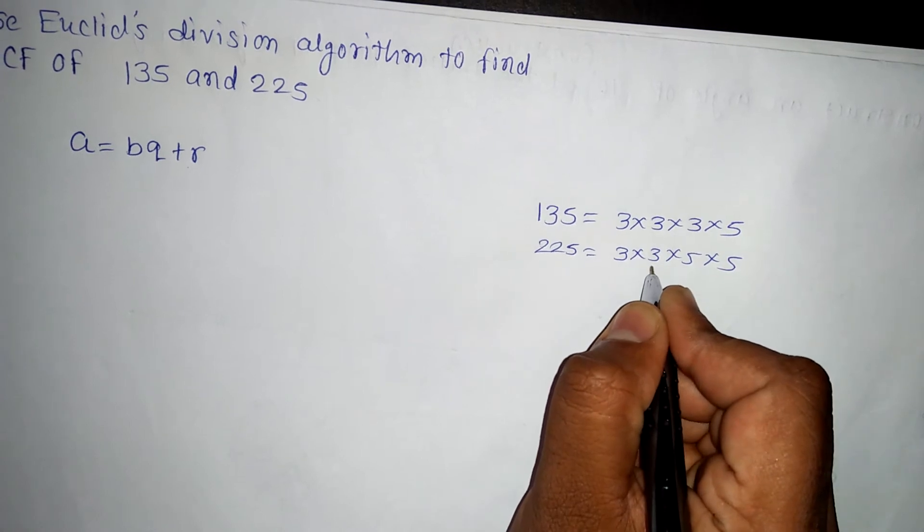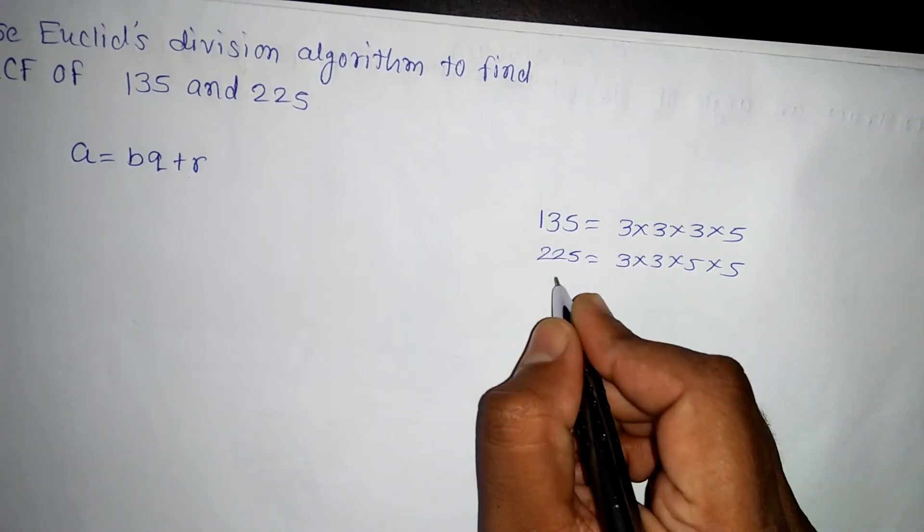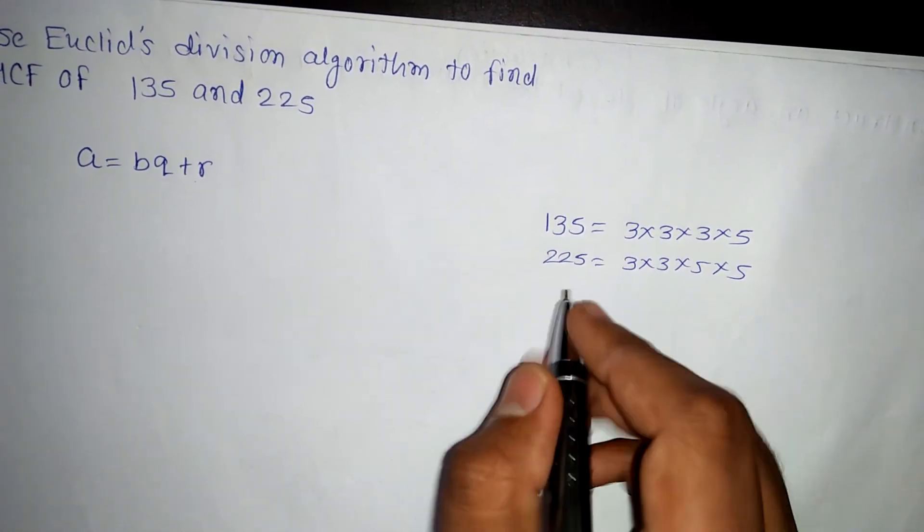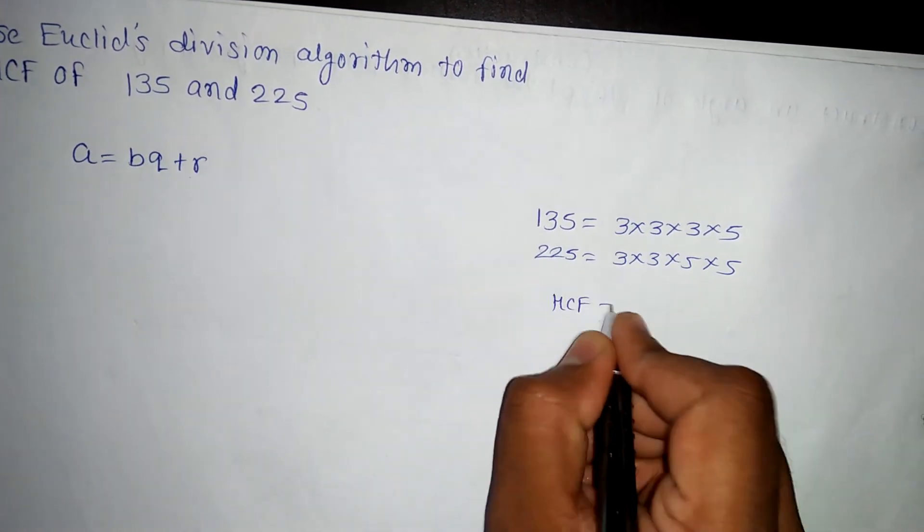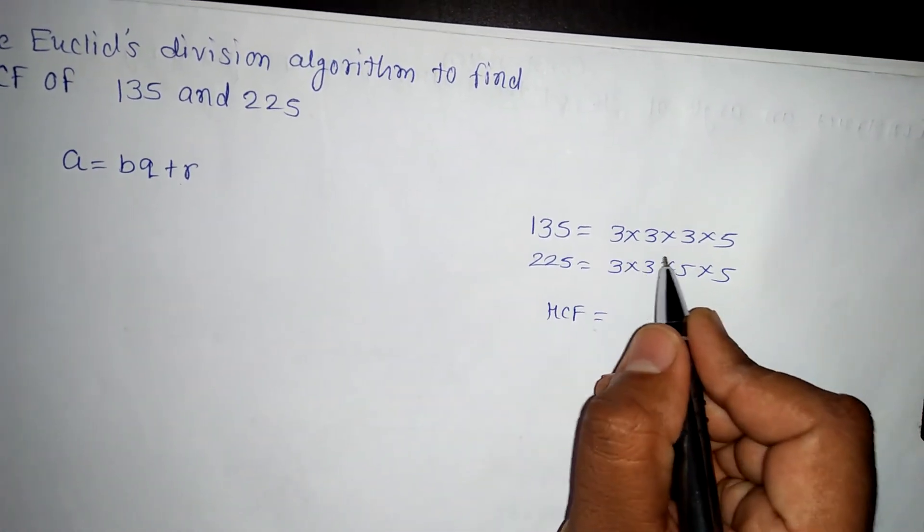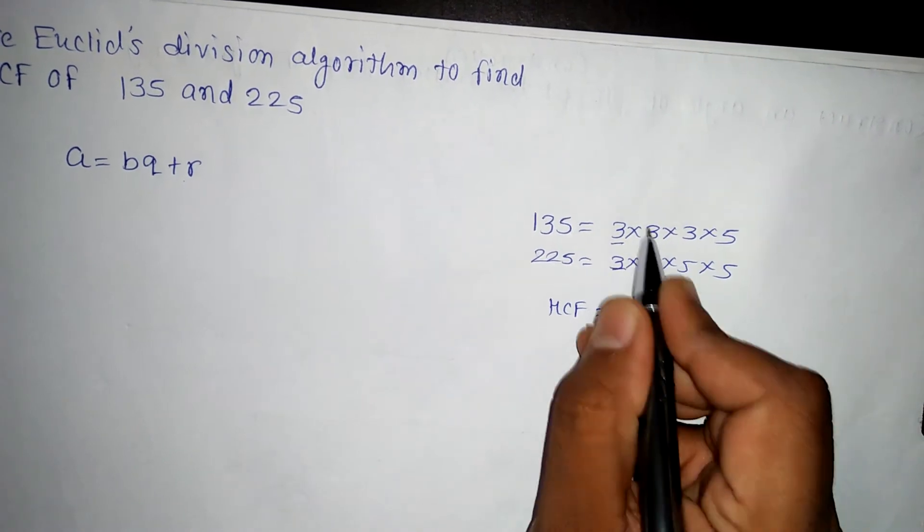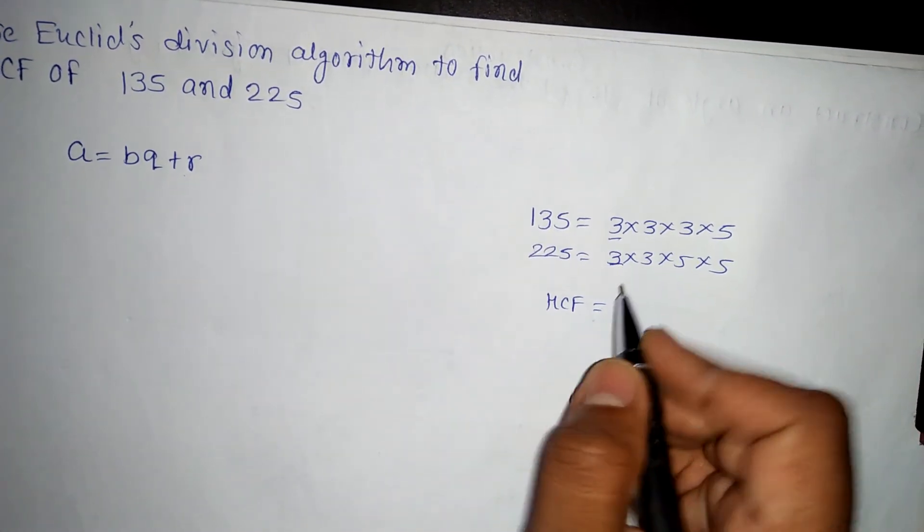5 times 5 is 25, times 3 is 75, times 3 is 225. Now we know how to find out HCF. HCF of both of them will be equal to, we need to take highest common factor. That means 3 times 3, two times, that means in both this comes, so I will write 3.